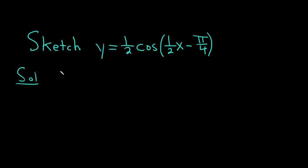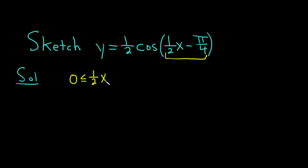We're going to follow a simple step-by-step process. The first step is to take whatever is inside the cosine and set it between 0 and 2π. So we have 0 ≤ one-half x minus π/4 ≤ 2π.